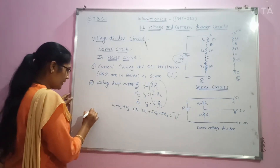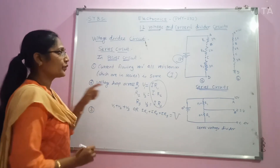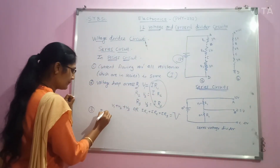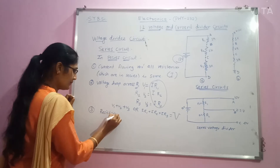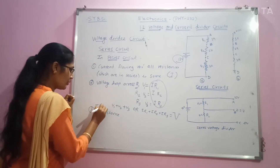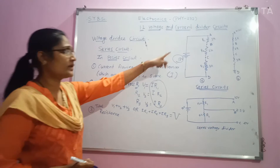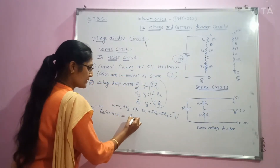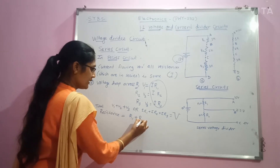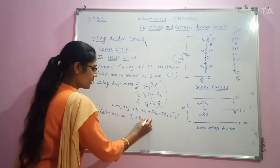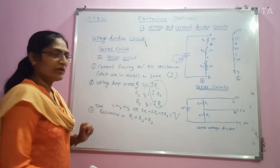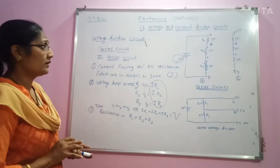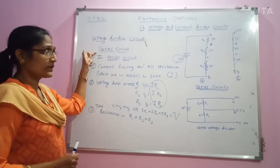The third property is that the total resistance of the circuit is given by the sum of all resistances present in series, that is R = R1 + R2 + R3. These are the three properties of the series circuit.